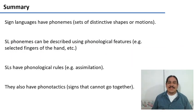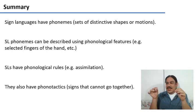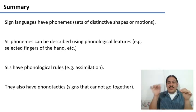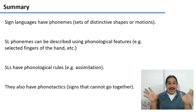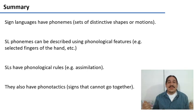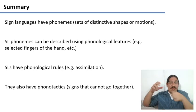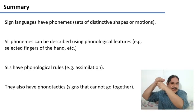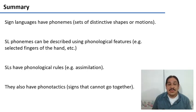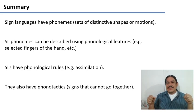In summary, sign languages have phonemes, which are sets of distinctive shapes or motions that you can use to tell one word from another. This would make them phonemes and this would make the words minimal pairs. The phonemes of sign languages can be described with phonological features, for example, which fingers are selected, and the signs are subject to phonological rules like assimilation, making one sign more similar to the ones around it. Sign languages also have phonotactics, which is conditions for which signs can and cannot go together.